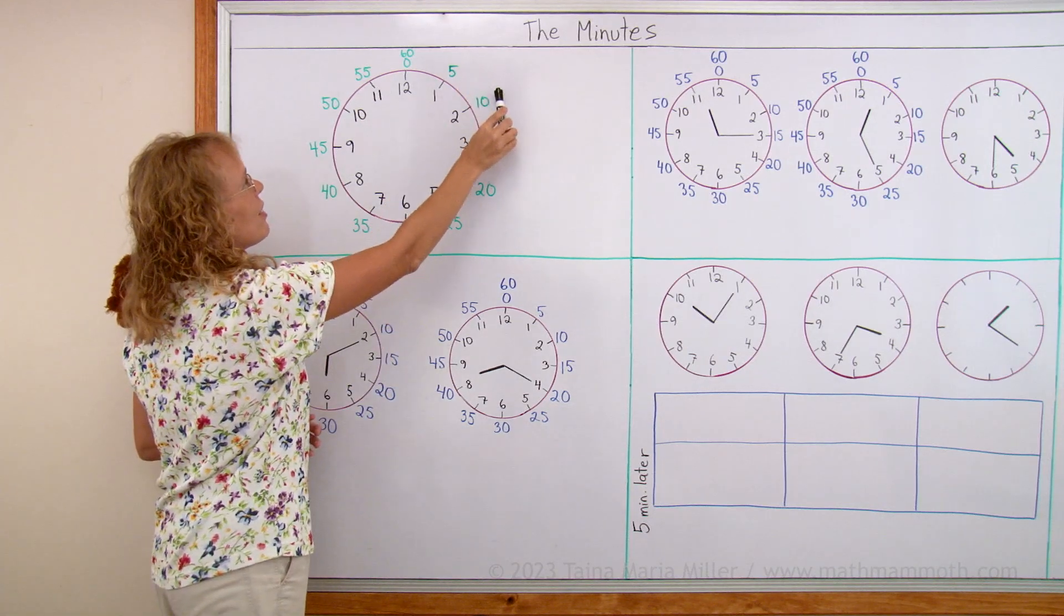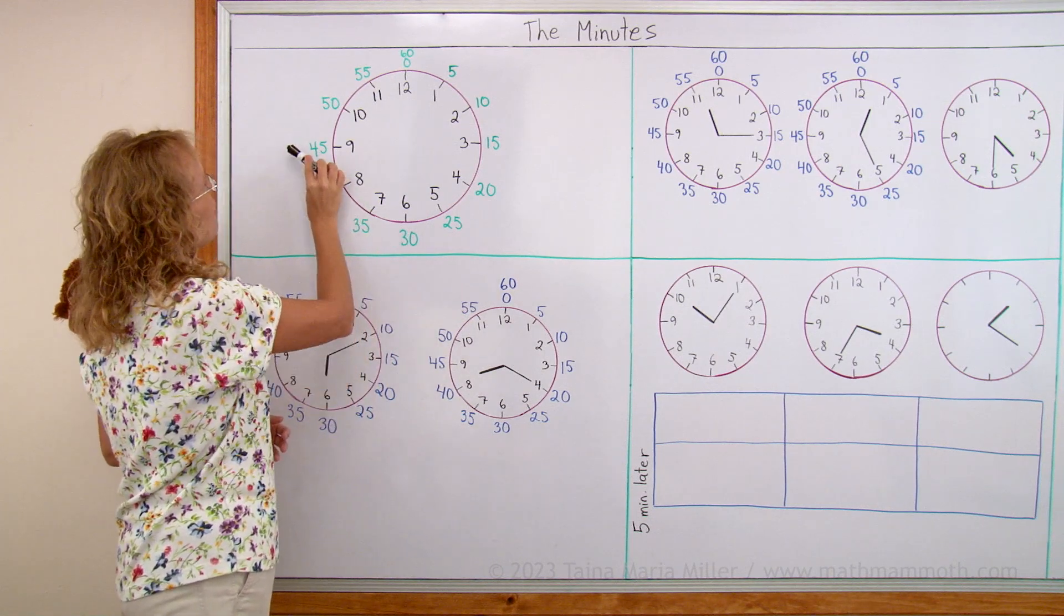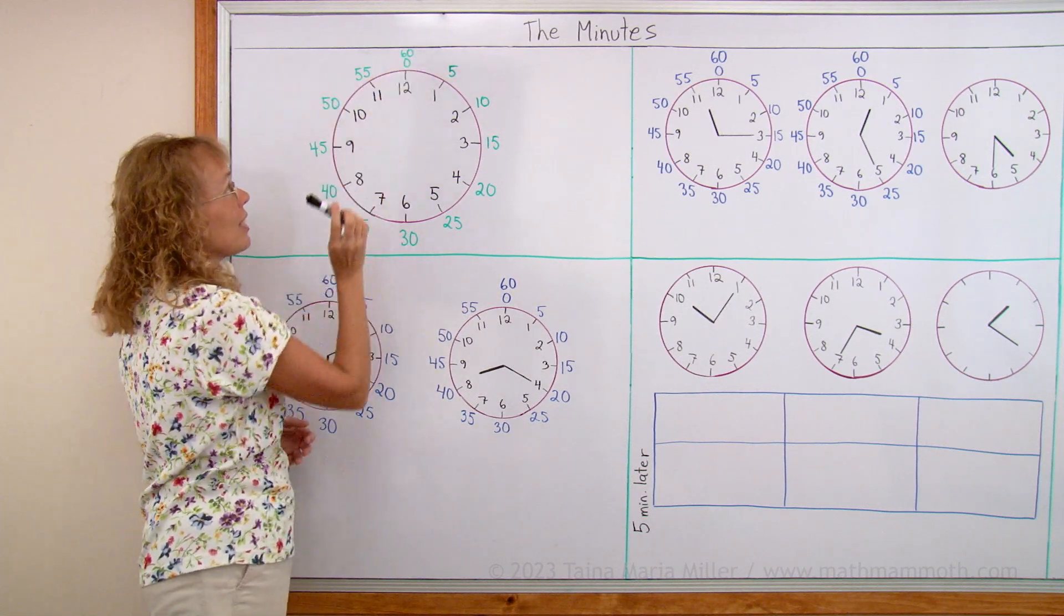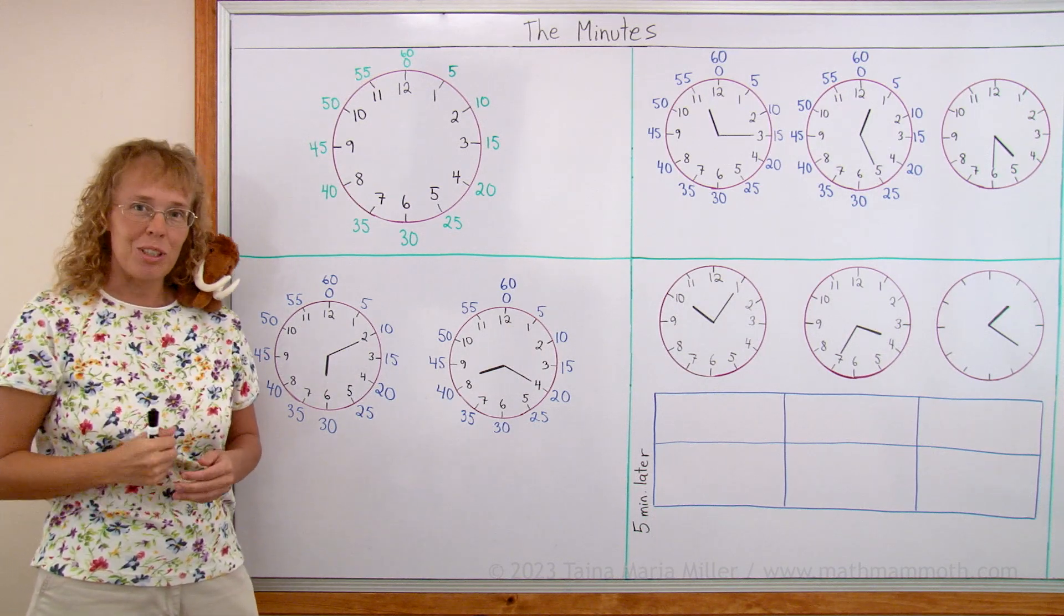Let me show you how it works. We have 5, 10, 15, 20, 25, 30, 35, 40, 45, 50, 55 and 60. Those are for the minute hand. And now let's see how it works on a real clock.